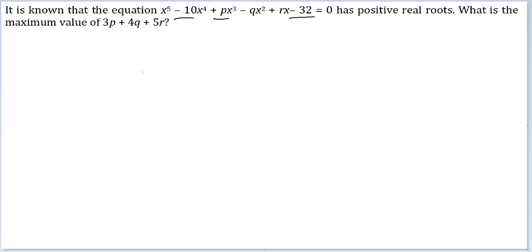So now p, which is sum of pairs of roots, will be 5C2 into 2 which is 4, so I get 40. p is equal to this.